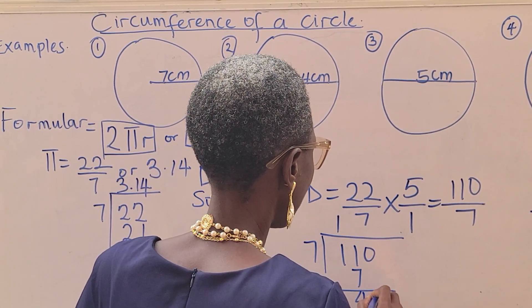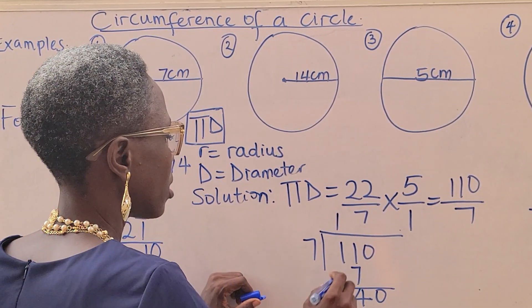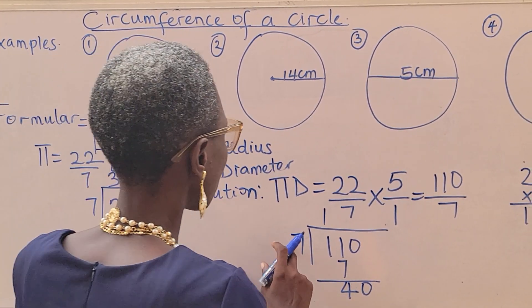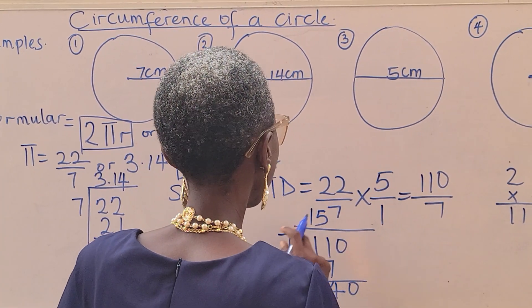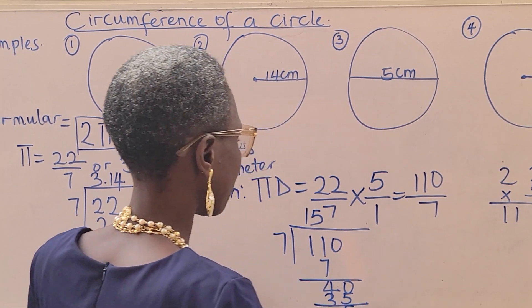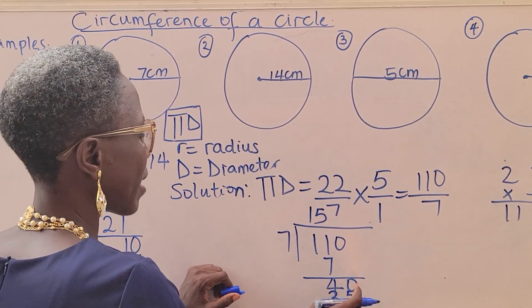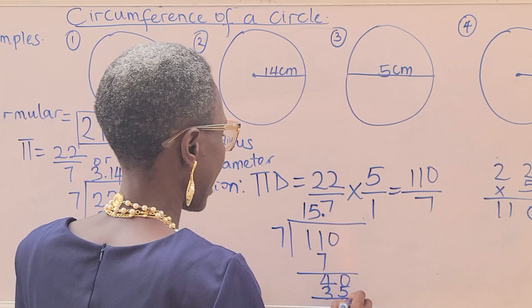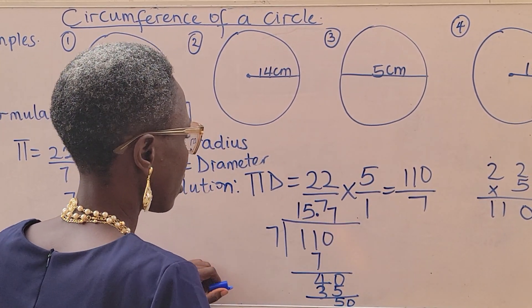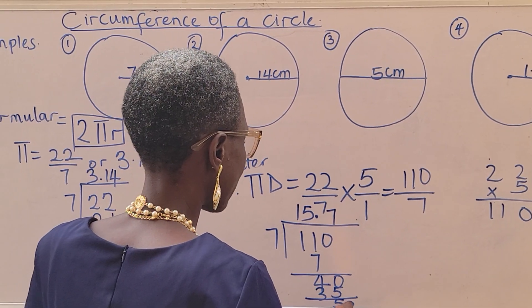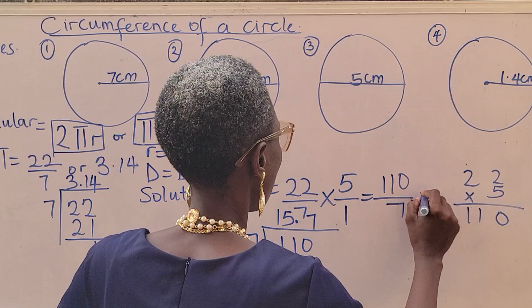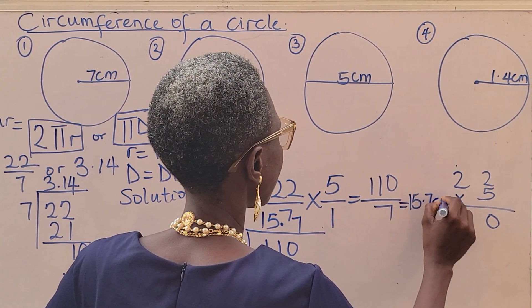You have 4 and 0. Then we have 40 divided by 7, that's 5. 7 times 5, 35. You are left with 5. 5 divided by 7 is not possible. Add your decimal point and add 0 here. 50 divided by 7, that's 7. 7 times 7, that's 49. So you can stop here. You have your answer to be 15.7 centimeters.